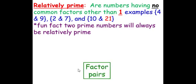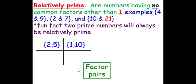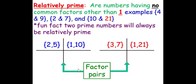The factor pairs of 10 are 2 and 5, 1 and 10. The factor pairs of 21 are 3 and 7, or 1 and 21. Notice that the only common factor they have is 1.